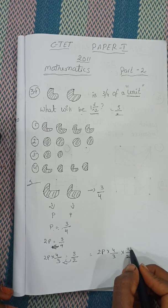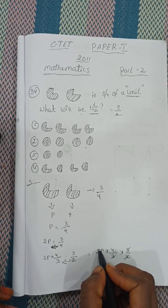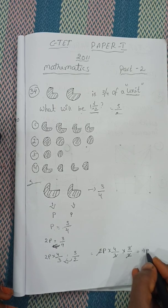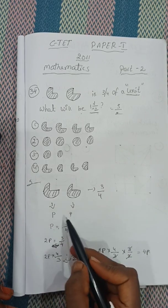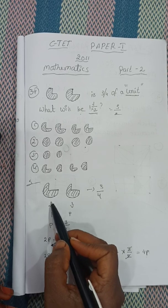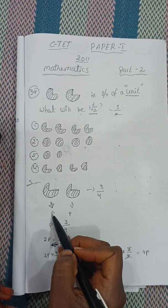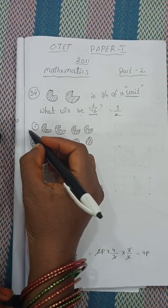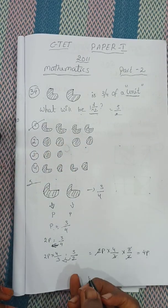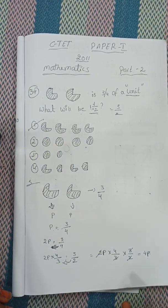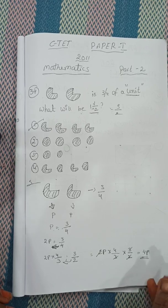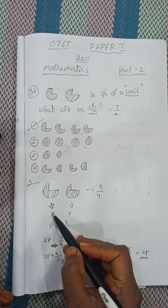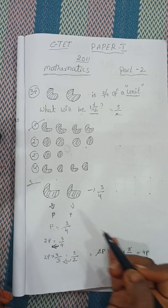2 here cancelled, 3 cancelled, 2 cancelled. How many is there? 4P. 1 picture P is there. How many 4 P's are there here? This is the first answer. 4P is the answer. 4P means I have converted the digit in P.